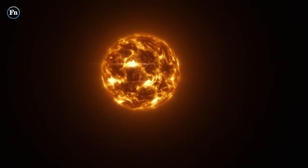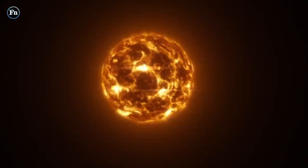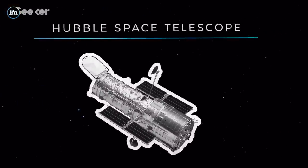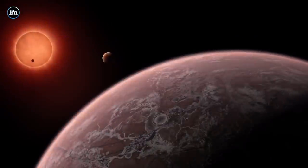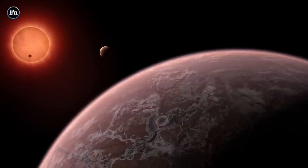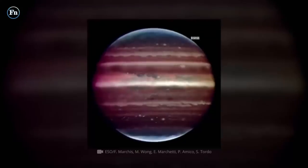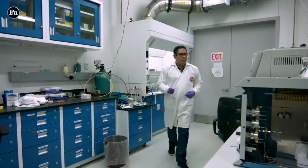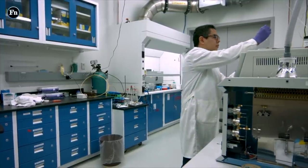With the Transiting Planets and Planetesimals Small Telescope, TRAPPIST, in Chile, to honor the telescope, scientists began referring to the star as TRAPPIST-1. NASA's Hubble Space Telescope was also used to find that TRAPPIST-1b and c were unlikely to have hydrogen-dominated atmospheres like the ones we see in gas giants.